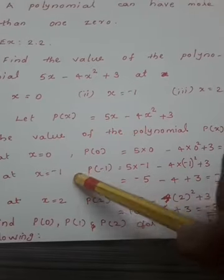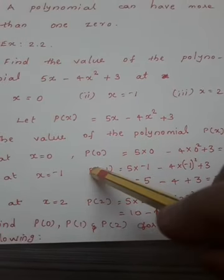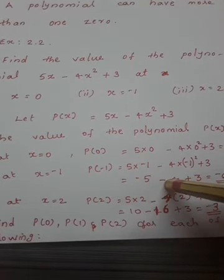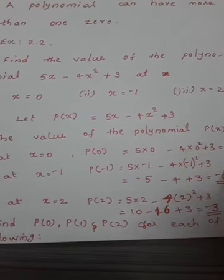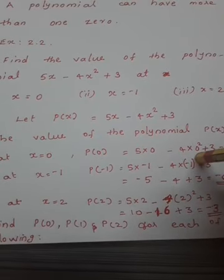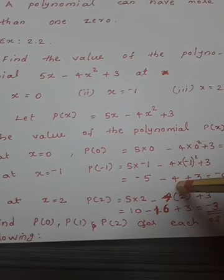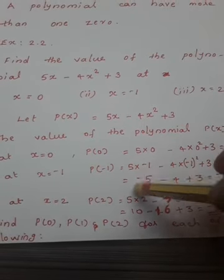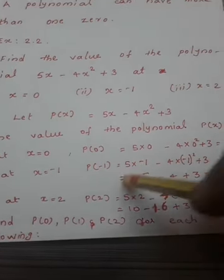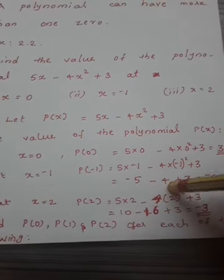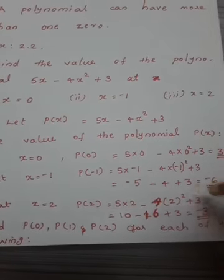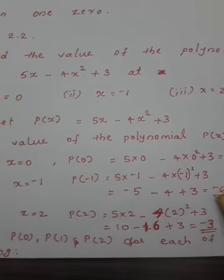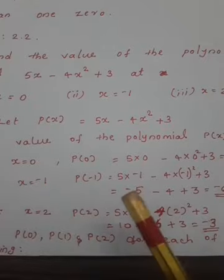At x equals negative 1, we substitute: 5 into negative 1 minus 4 into negative 1 square plus 3. Negative 1 squared is positive 1, so 4 into 1 is 4. Then 5 into negative 1 is negative 5. So we have negative 5 minus 4 plus 3. Negative 5 minus 4 is negative 9, and negative 9 plus 3 is negative 6. So the value of the polynomial at x equal negative 1 is negative 6.